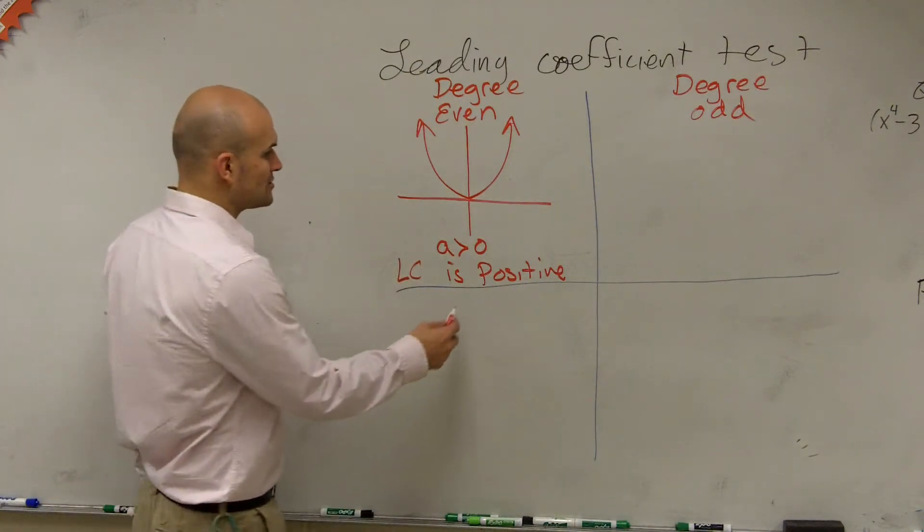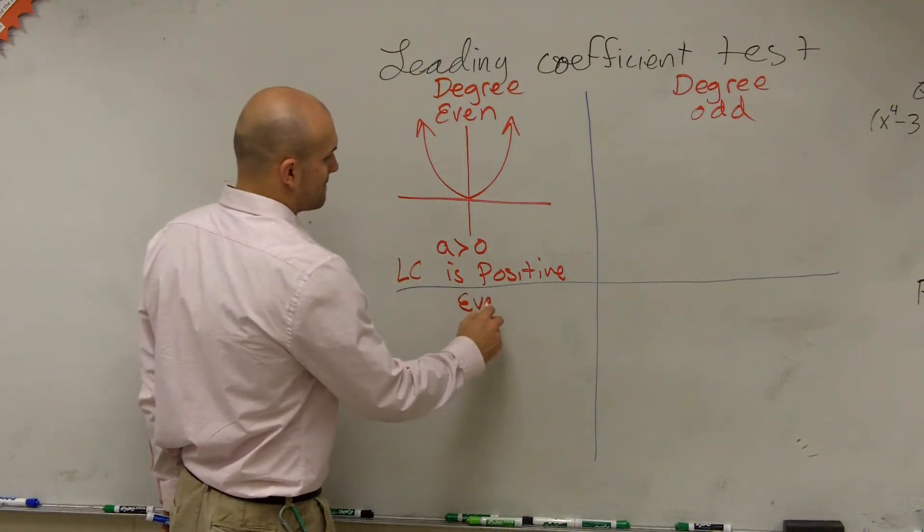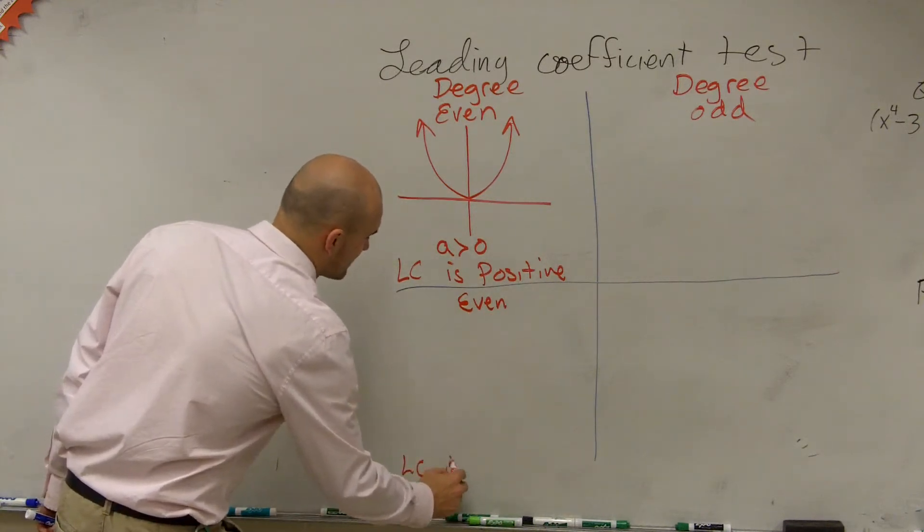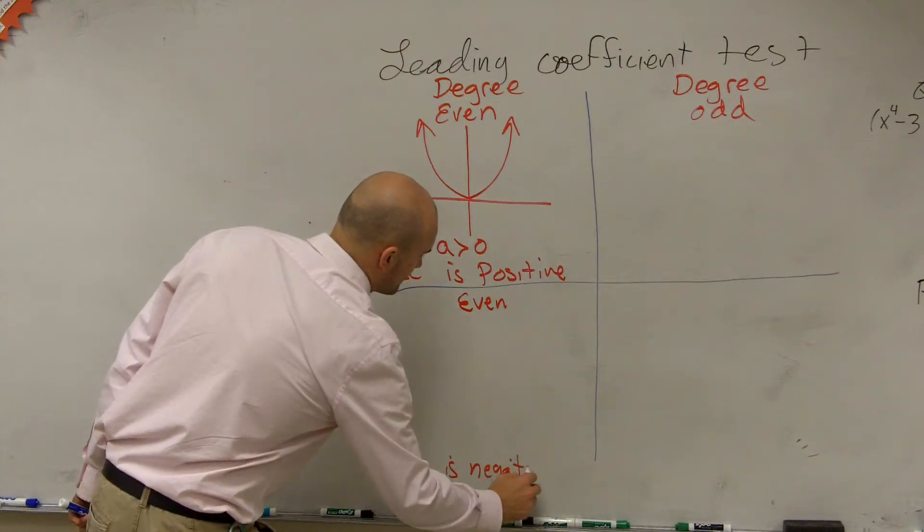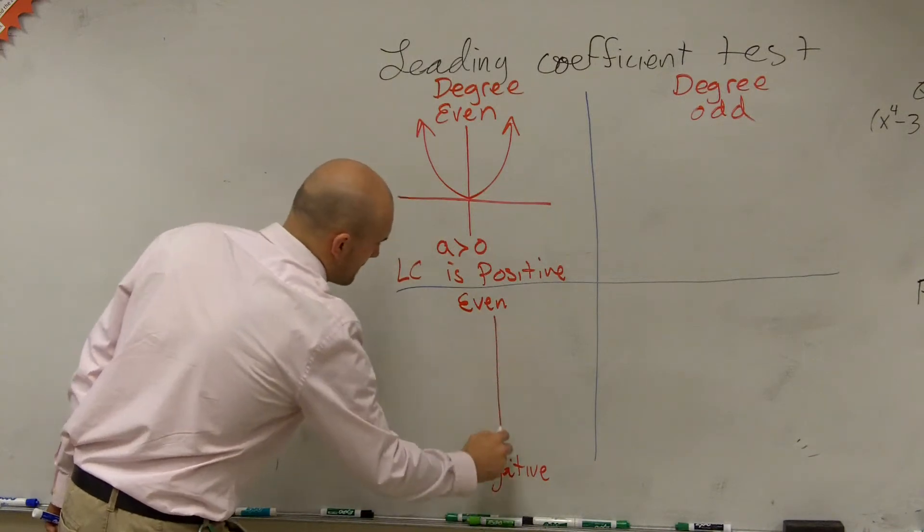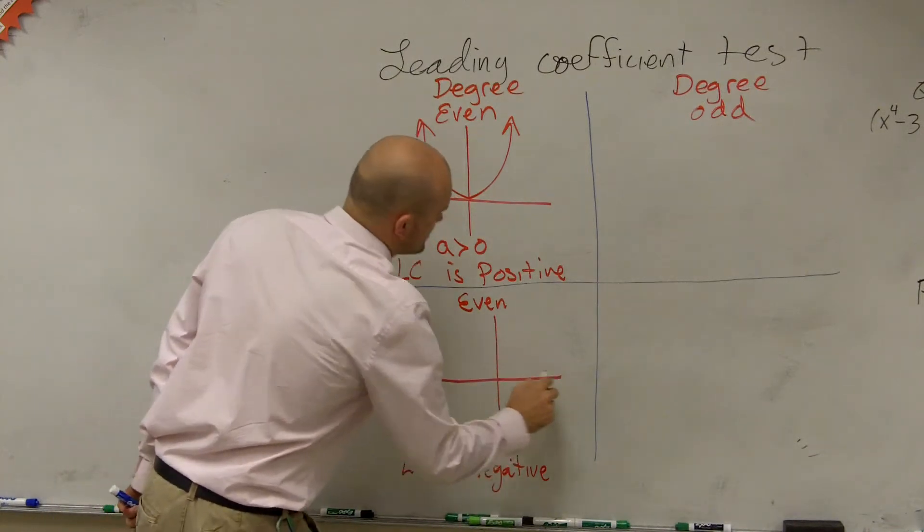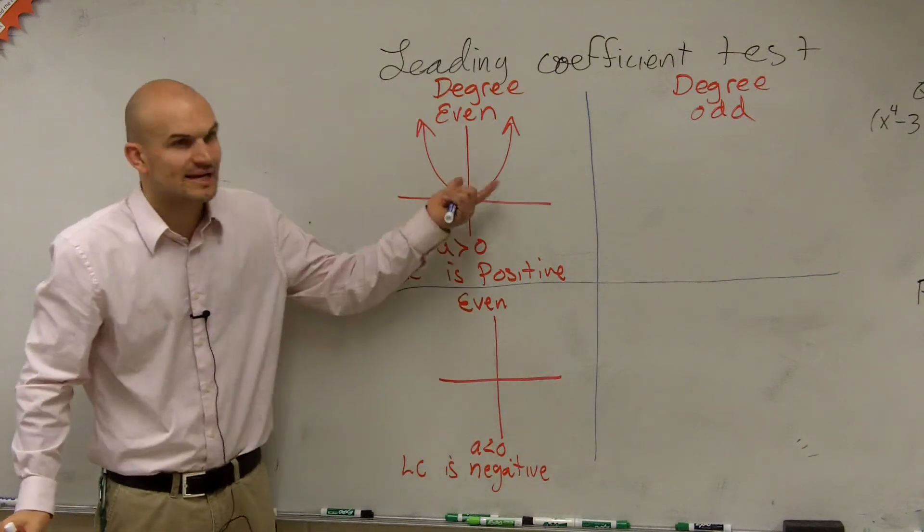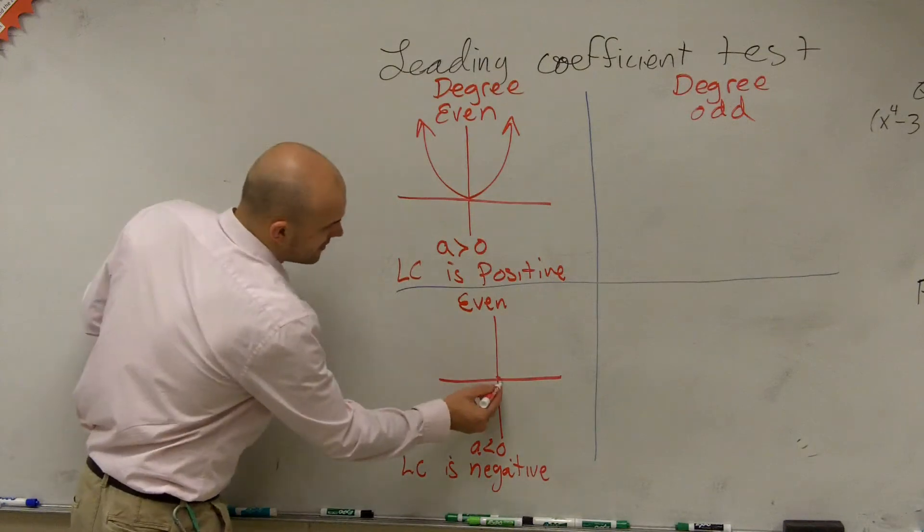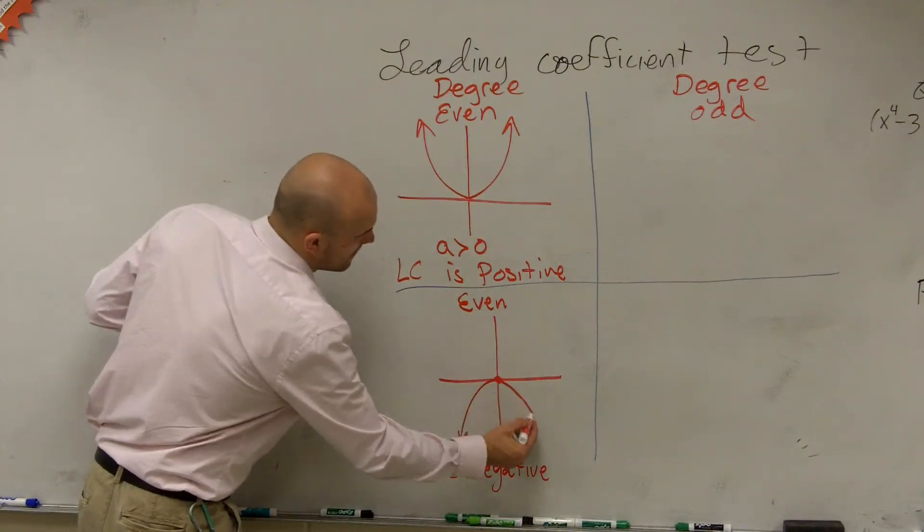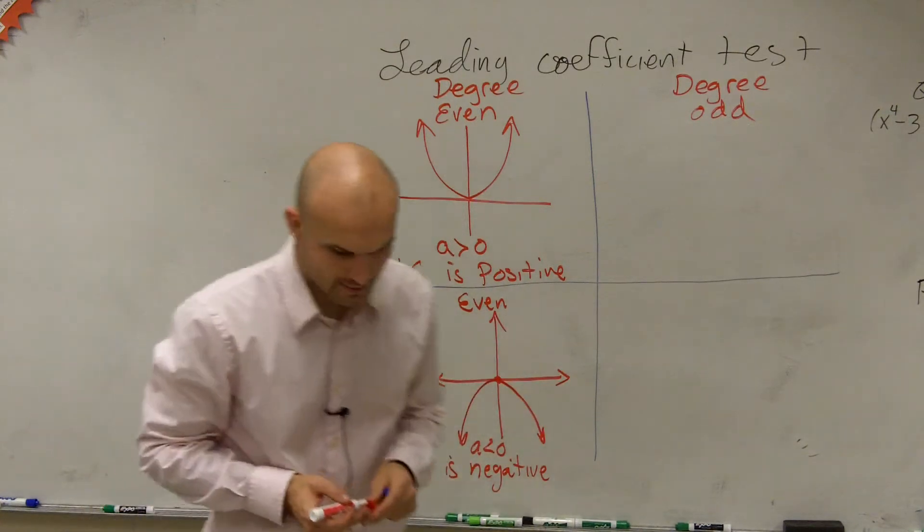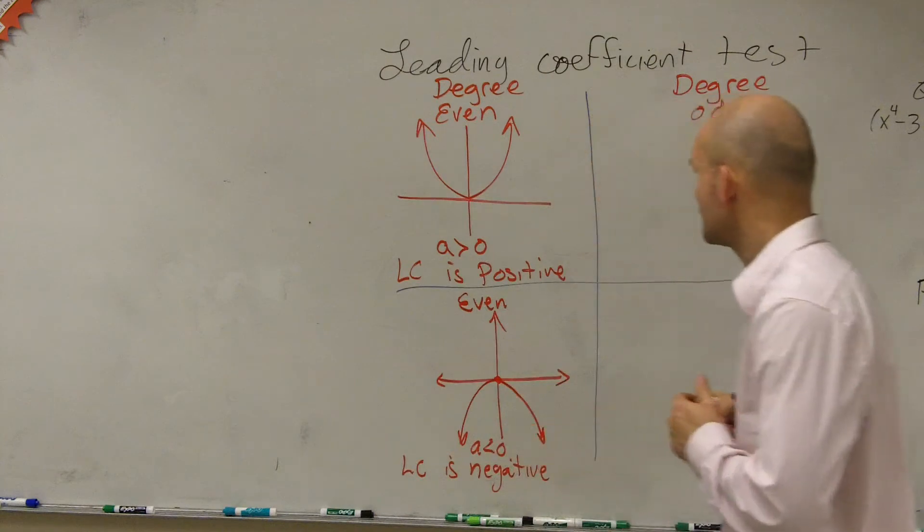Now, let's look at what about when my degree is even, but now my LC, my leading coefficient, is negative. Or we say a is less than zero. So, ladies and gentlemen, you've looked at this before. What happens when we take this graph and we make it negative? It reflects over the x-axis, right? So now we're going to have a graph that's going to look something like this.